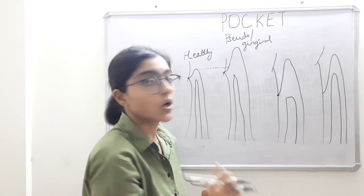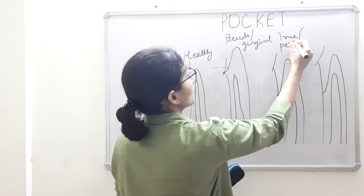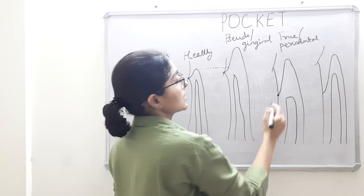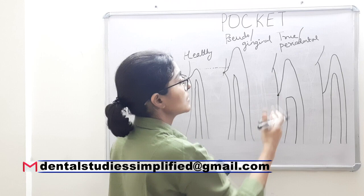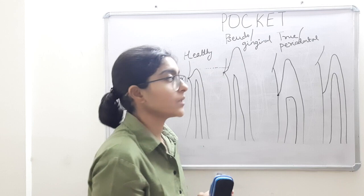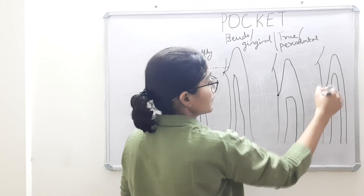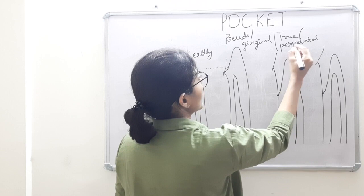If this is pseudo pocket, what is a true pocket? True pocket, also known as periodontal pocket, is the one which has deepening of the sulcus due to apical migration of the base of the sulcus associated with destruction of the underlying structures — cementum, periodontal tissues, and bone. Under true or periodontal pocket we have two types: suprabony and infrabony. Both are true or periodontal pockets because both have deepening associated with apical migration of the base of the sulcus.